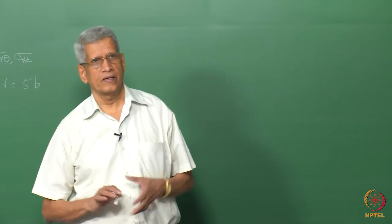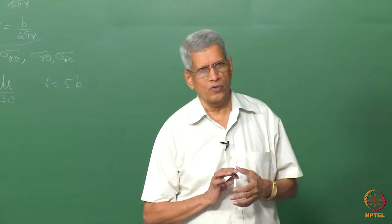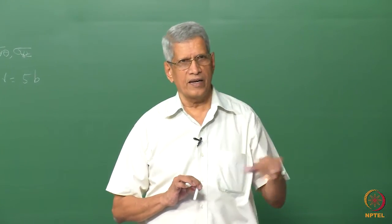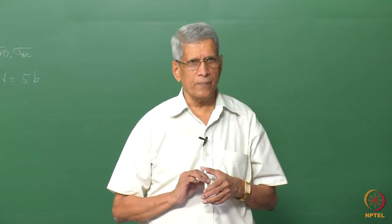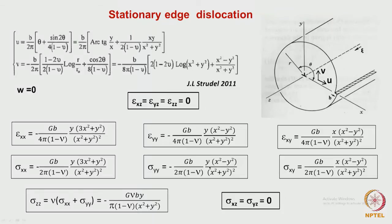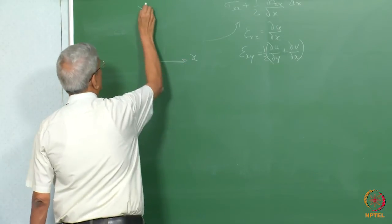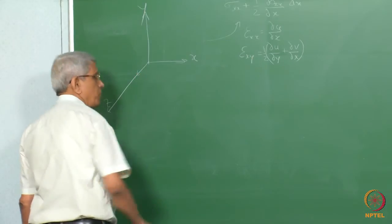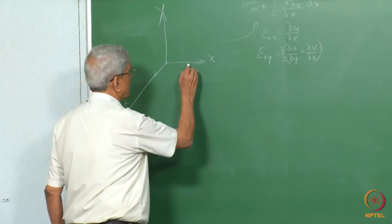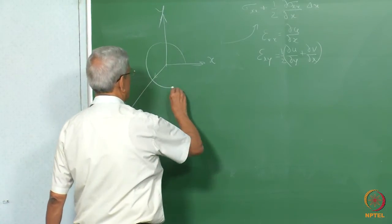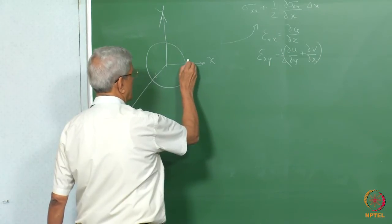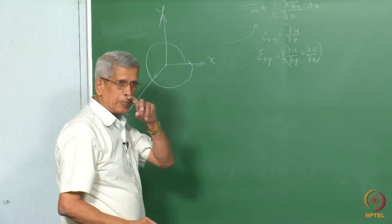The essential take-home points about the screw dislocation: the stress field has radial symmetry and decreases as 1/r as we go away from the dislocation. Now let us look at the stationary edge dislocation. In this case, the dislocation line is also assumed to be along the z direction, with this as the positive sense chosen.